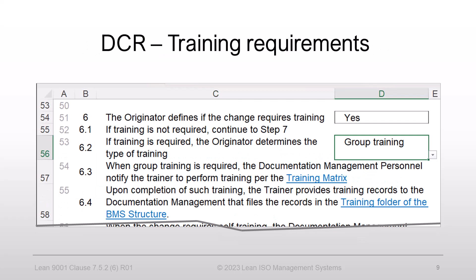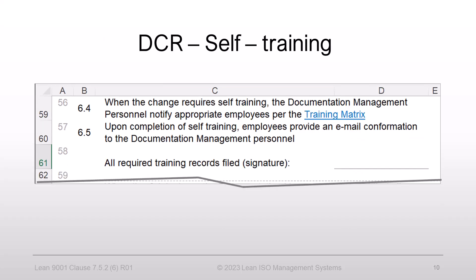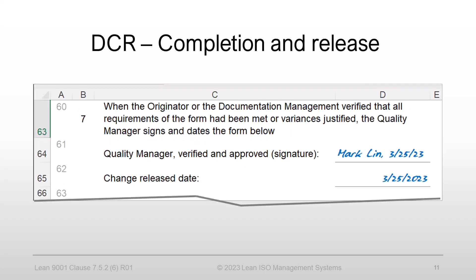The following section is training. Depending on the change, the originator determines if training is required. In our example, the originator selects group training, and the subject matter expert performs such review per the training matrix and provides attendance records to documentation management personnel for filing. When the originator determines that self-training is required, documentation management collects email confirmations for filing. If training is not required, we move on to the next section.